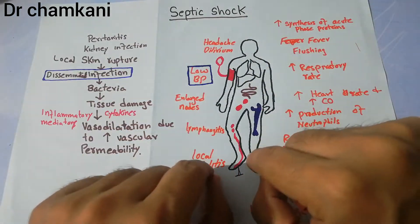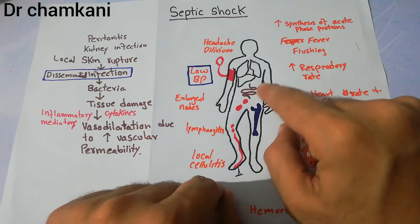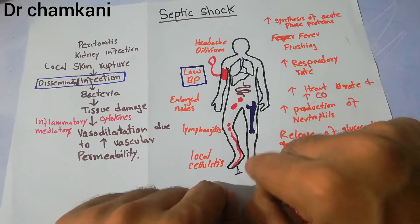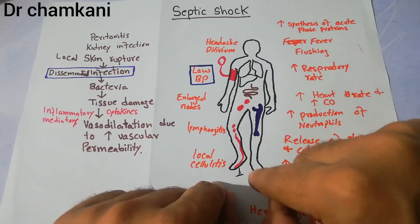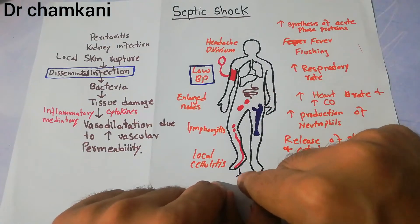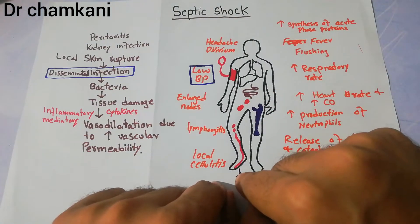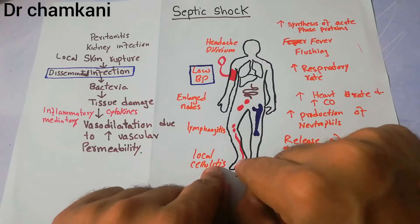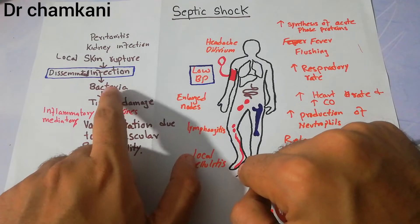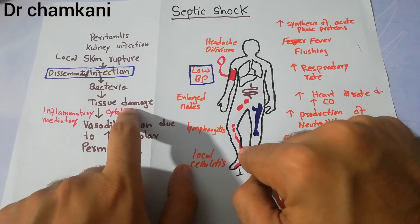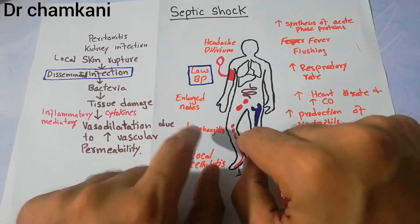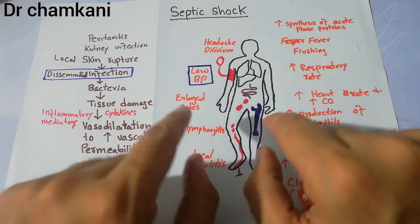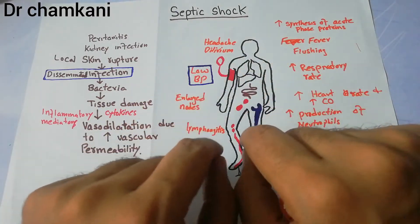In the diagram shown here, a nail is rupturing the skin. What happens is that bacteria get introduced into the body and cause tissue damage in different areas of the body.